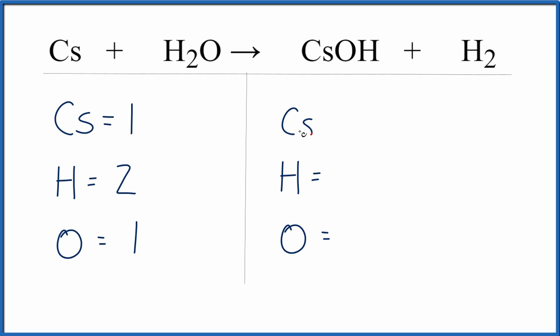Over on the product side, we have one cesium atom here. We have one hydrogen, plus - be careful - this is a two here. We have one plus the two, that equals three. People often forget to add all the hydrogens up, and that causes problems. And then we got one oxygen.